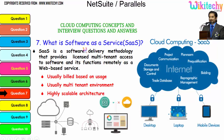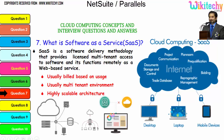Software as a Service (SaaS) is a software delivery methodology that provides licensed multi-tenant access to software and functions remotely as a web-based service. It is usually built based on usage, with a multi-tenant environment and highly scalable architecture. You rent a software from the cloud and use or access it via a browser — that is how Software as a Service works.